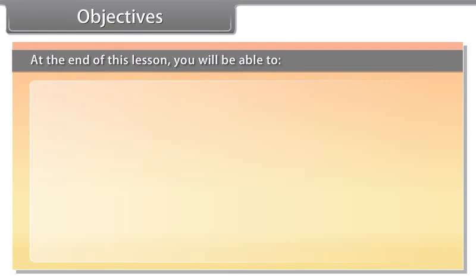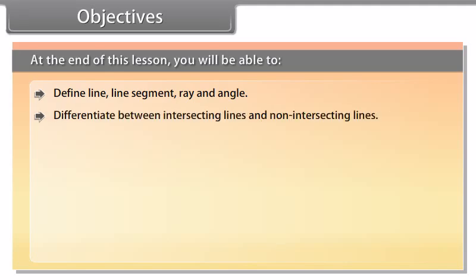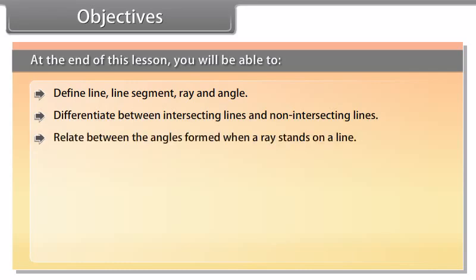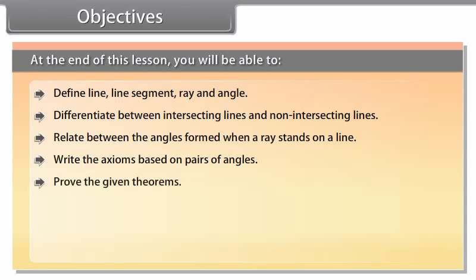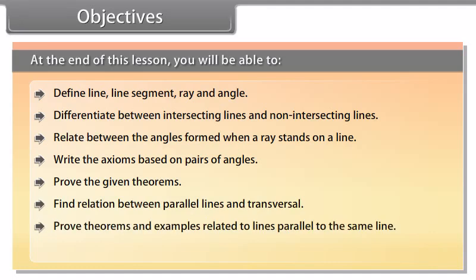At the end of this lesson, you will be able to: define line, line segment, ray and angle; differentiate between intersecting lines and non-intersecting lines; relate between the angles formed when a ray stands on a line; write the axioms based on pairs of angles; prove the given theorems; find the relation between parallel lines and transversal; prove theorems and examples related to lines parallel to the same line; and prove the angle sum property of a triangle.